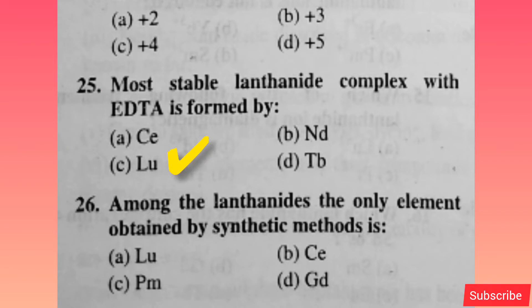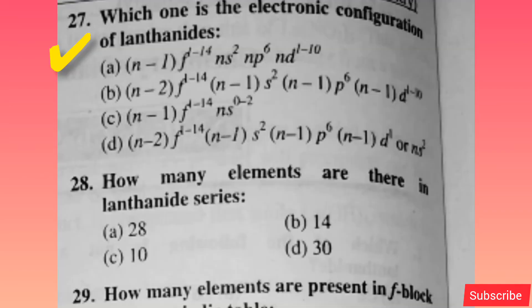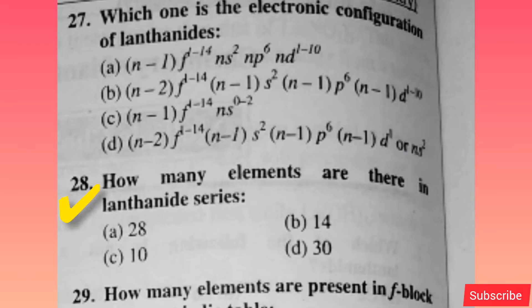The most stable lanthanide complex with EDTA is formed by — option C is correct. Among the lanthanides, the only element obtained by synthetic method is — option C is correct. Which one is the electronic configuration of lanthanides? Option D is correct.